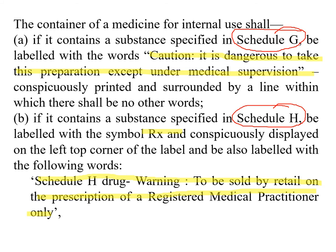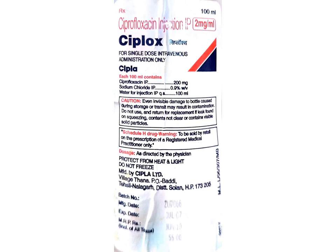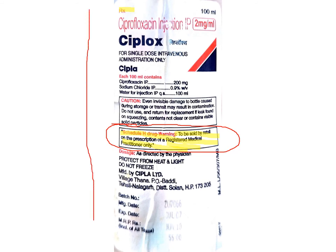Looking at an example label, the top left-hand corner shows RX — indicating it is a Schedule H drug — and the Schedule H drug warning is displayed: to be sold on the prescription of a registered medical practitioner only. These wordings are inside a box in which no other wordings are displayed. This is how the pharma company marketing the drug ensures that all the provisions laid down in the DNC Act and Rules are complied with, from the top to the bottom of the label.